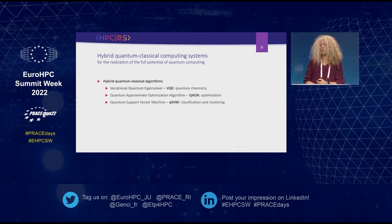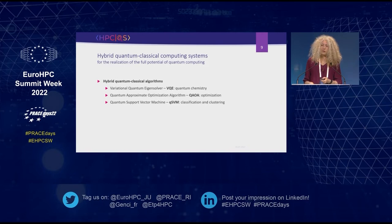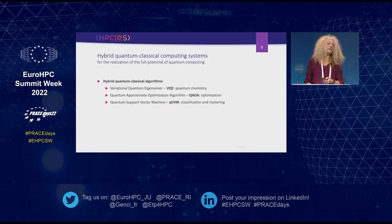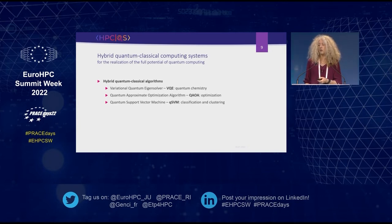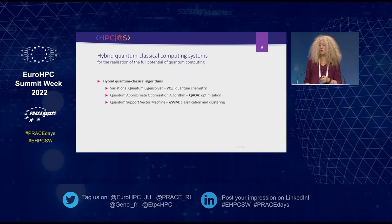Talking about hybrid quantum-classical computing systems: we have several hybrid quantum-classical algorithms. An example is the Variational Quantum Eigensolver (VQE), used in quantum chemistry to calculate the lowest energy of molecules. Then we have the Quantum Approximate Optimization Algorithm (QAOA), used for solving optimization problems. We also have the Quantum Support Vector Machine (QSVM) for machine learning classification and clustering tasks.